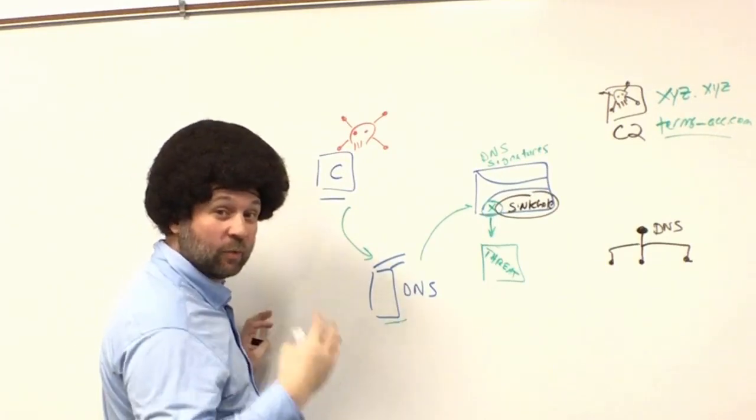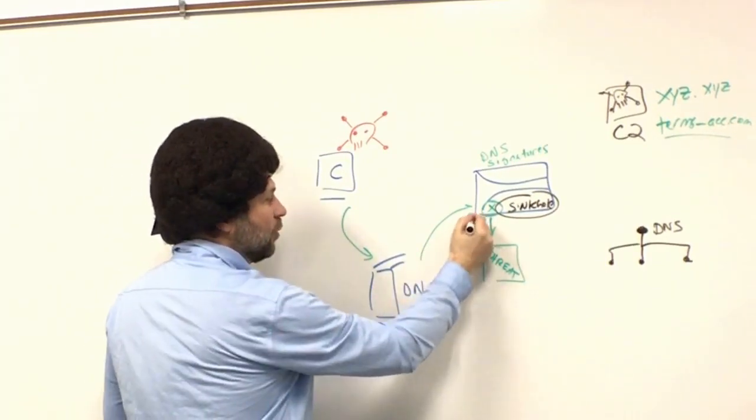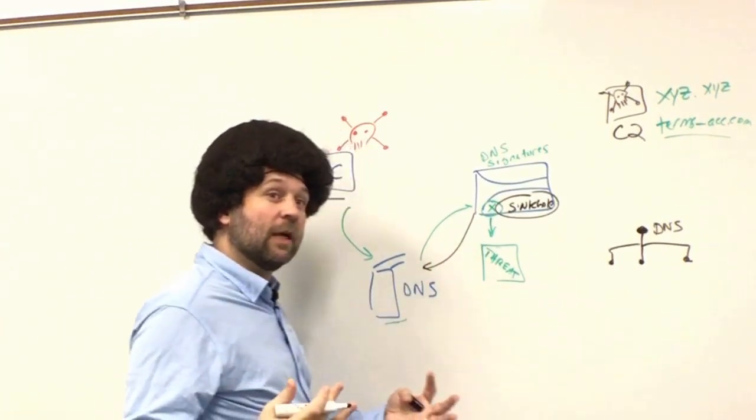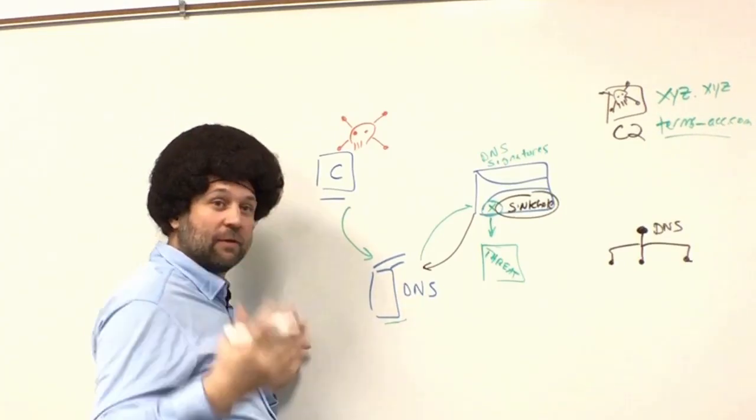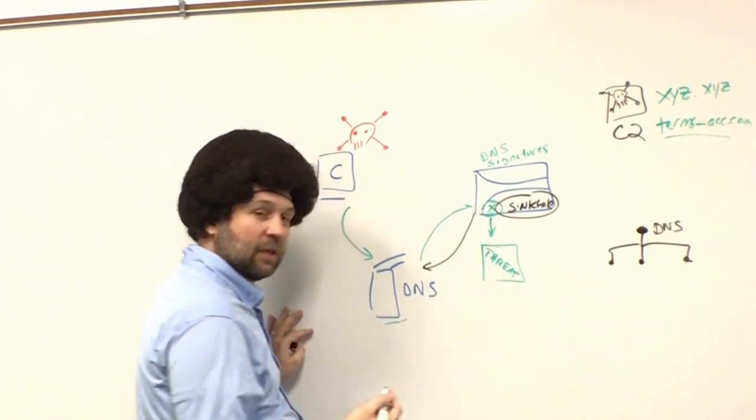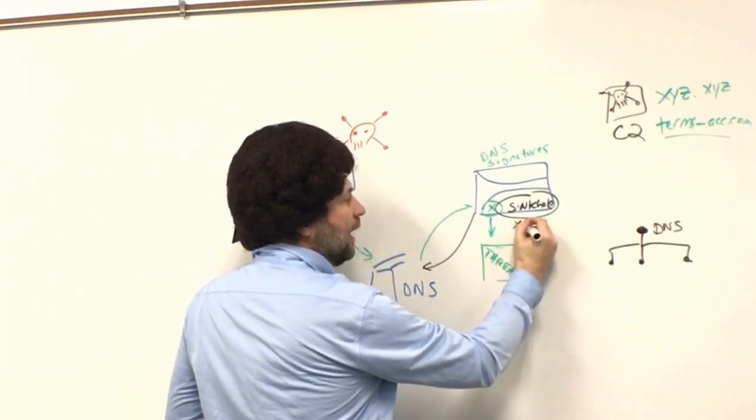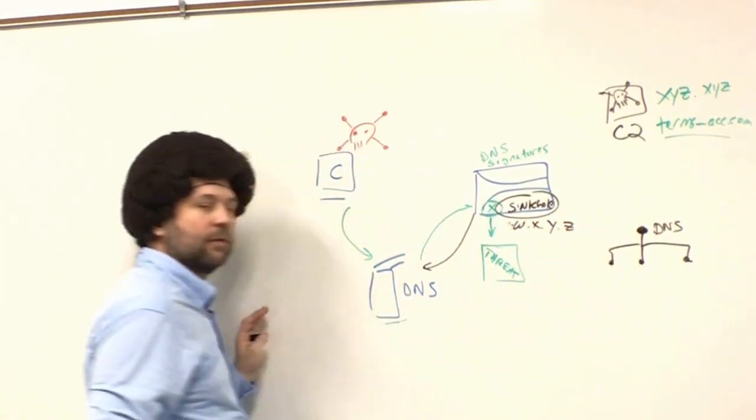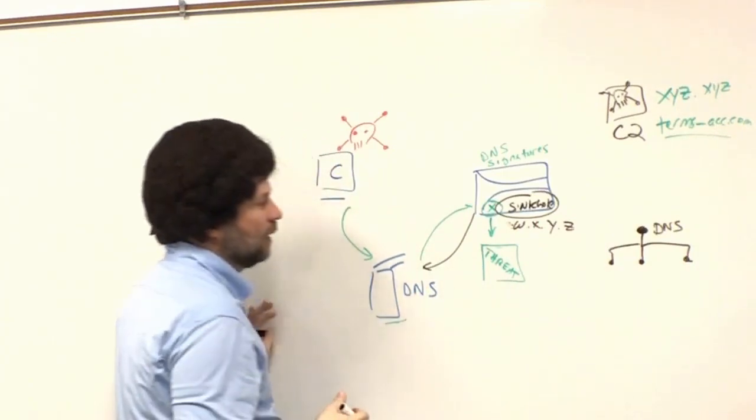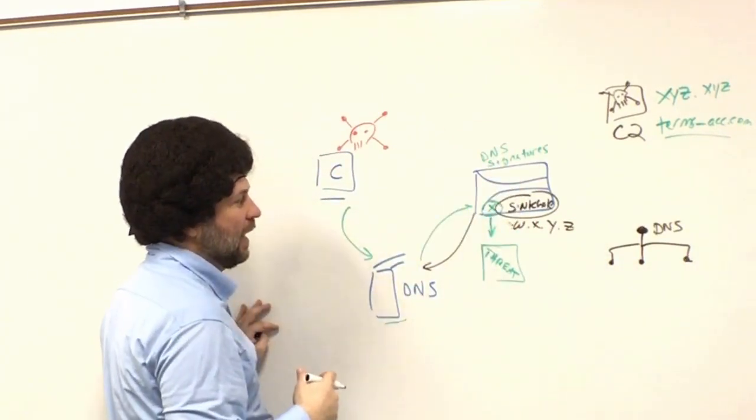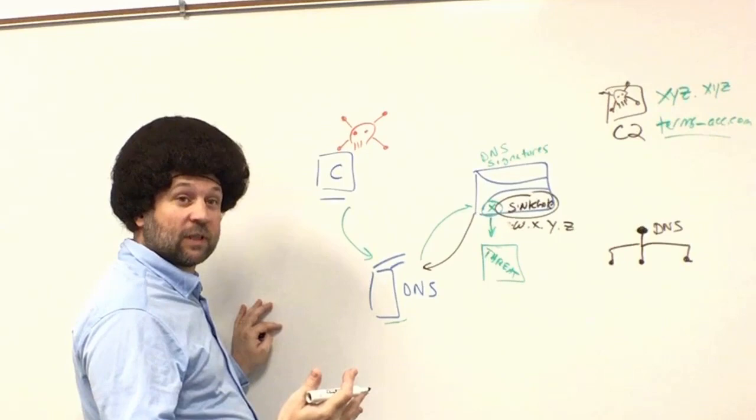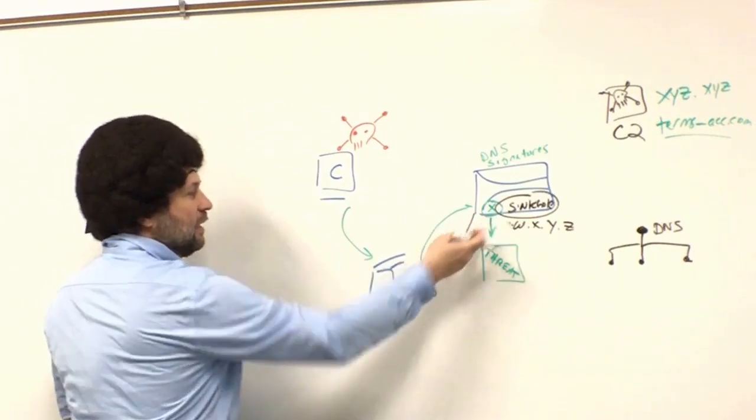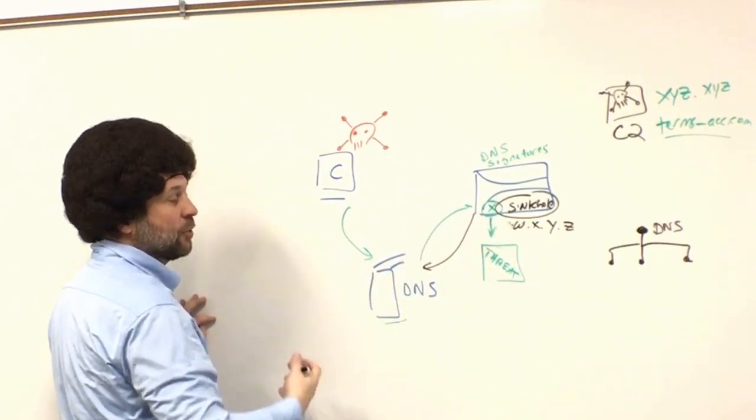The firewall is going to reply to this query with a sinkhole address. You configure the firewall with the sinkhole address—Mitch will show us how to do this in a demonstration here in a little bit. It could be some sort of routable IP address. The firewall comes with a default IP address from Palo Alto Networks you can use, but you can put some other routable address.